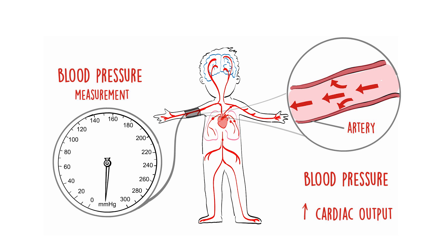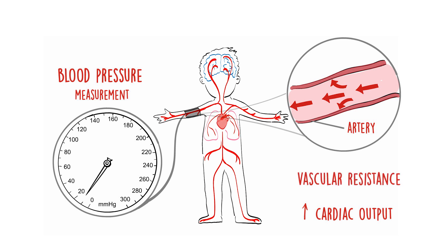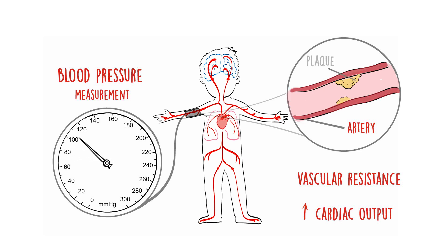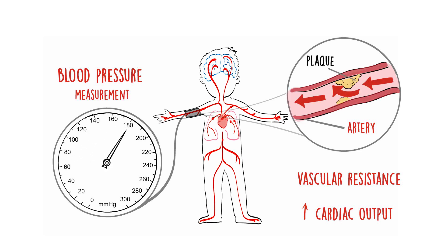Blood pressure is determined by the amount of blood your heart pumps and the amount of resistance to blood flow in your arteries. An increase in blood pressure is produced when the arteries become narrower or stiffer, or when a larger volume of blood is being pumped through the heart. The higher the blood pressure, the harder the heart has to pump.